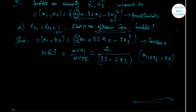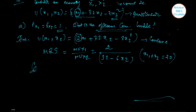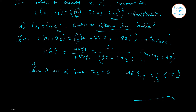The solution is not at the corner x2 equal to 0, because at that corner MRS will be 1/16, which is less than 1, the price ratio. Remember that MRS should equal the price ratio at the optimum. Since MRS < price ratio at x2=0, the consumer will benefit from spending some money on x2.